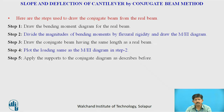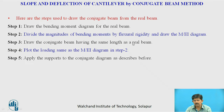Steps to draw the conjugate beam are as follows. First, draw the bending moment diagram for the real beam. Then divide the magnitudes of the bending moment by flexural rigidity EI and draw the M/EI diagram. Next, draw the conjugate beam having length equal to that of the real beam and plot the loading diagram as the M/EI diagram. Finally, apply the supports to the conjugate beam as per the conversion rules.